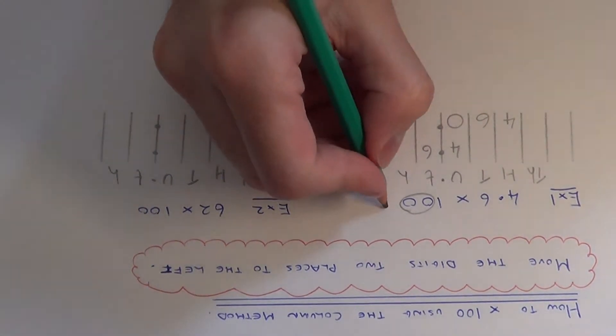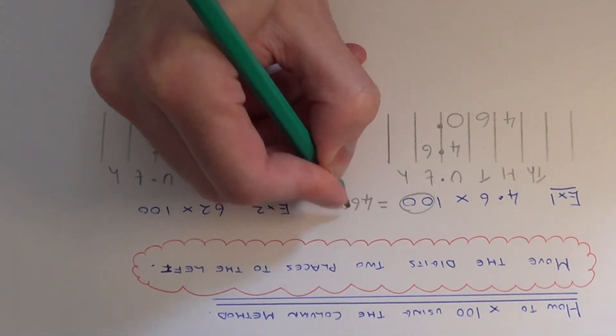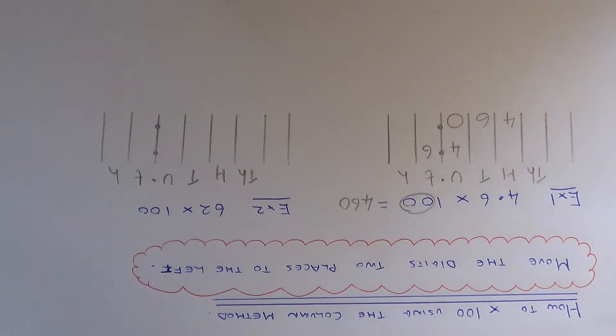Our final answer, if we just write it off the columns, will be 460. There's no need to put the decimal point as we have nothing after it.